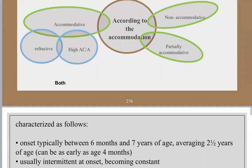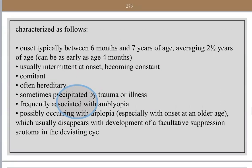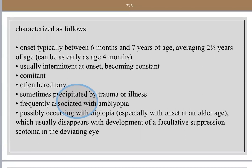The characteristics of accommodative esotropia: onset is between six months and seven years, averaging two and a half years — older than the congenital type. It is usually intermittent at onset and then becomes constant. It is concomitant, often hereditary, sometimes precipitated by trauma or illness, frequently associated with amblyopia. Diplopia may be present in older children, but is eliminated by suppression or anomalous retinal correspondence.